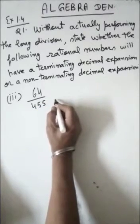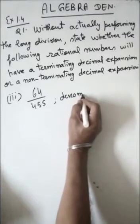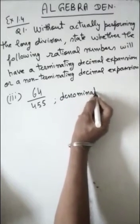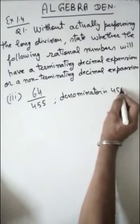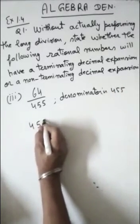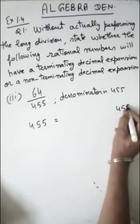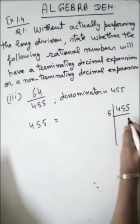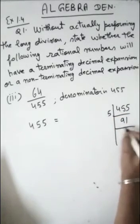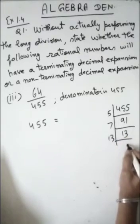Here denominator is 455. So prime factorization of denominator 455 will be: 5 divides into 455 to give 91, then 7 divides into 91 to give 13, then 13 divides into 13 to give 1.